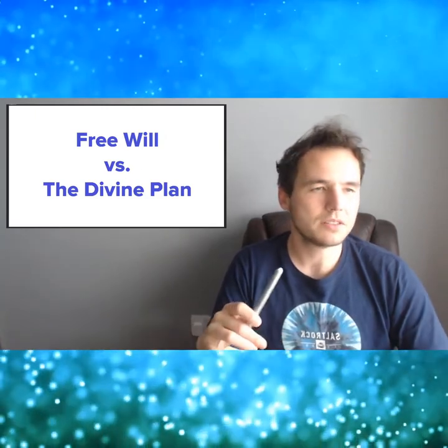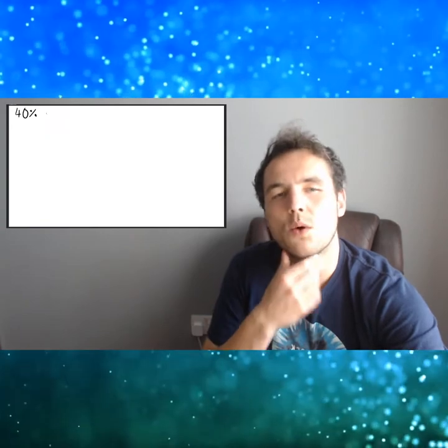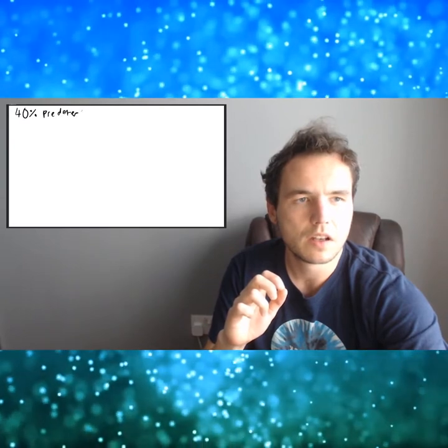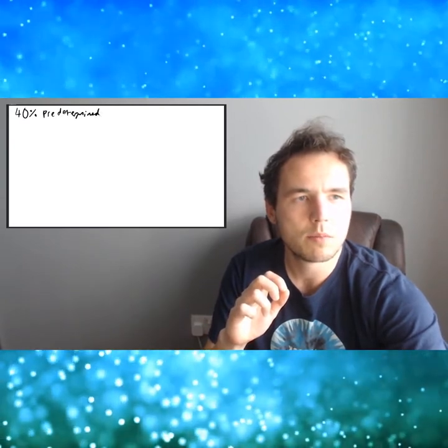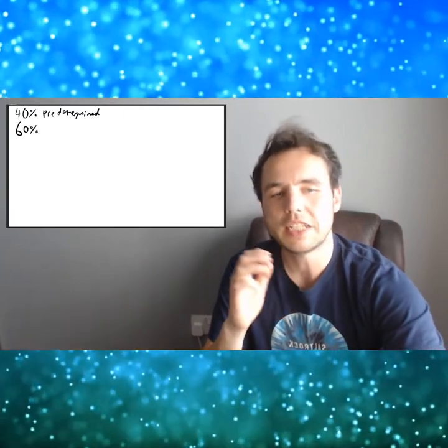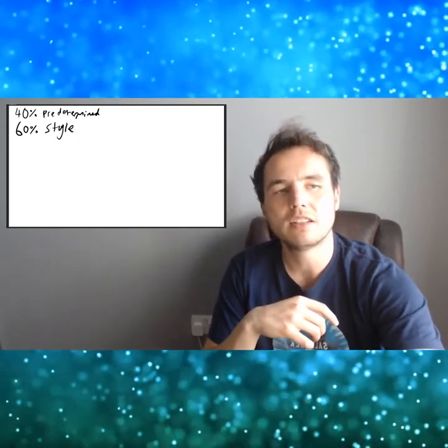Now I'm gonna just kind of illustrate this and try to explain this better. So one concept that I really like, I came across at one point, was that about 40 percent of our lives are essentially almost predetermined by our higher selves, and the remaining 60 percent is essentially the style of which we play out that predeterminism.